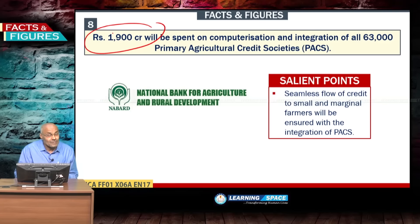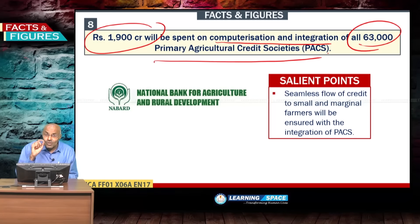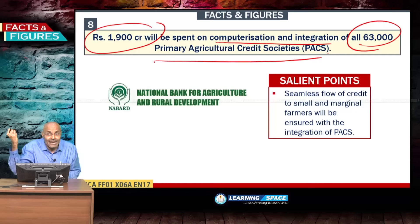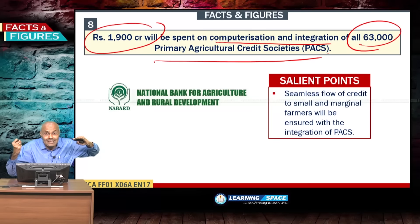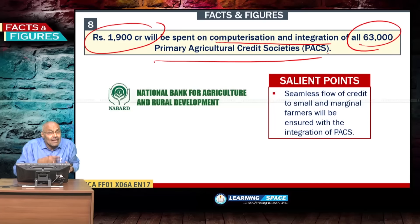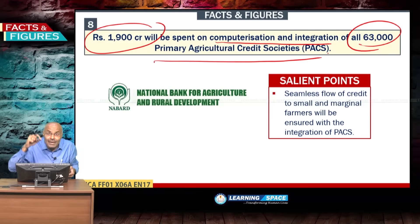₹1,900 crores will be spent for computerization and integration of 63,000 primary agricultural credit societies (PACS). These will be brought under core banking and integrated with district central cooperative banks. This will be implemented by NABARD.